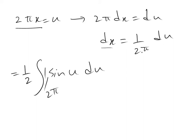Because here, dx is equal to 1 divided by 2 pi times du. Therefore, this will be equal to 1 divided by 2 times 1 divided by 2 pi. That will be 1 divided by 4 pi integral of sine u du.